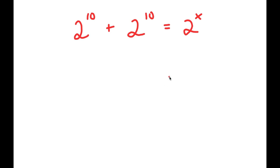In this problem, I have 2 to the power of 10 plus 2 to the power of 10 is equal to 2 to the power of x. So I want to find the value of x here.